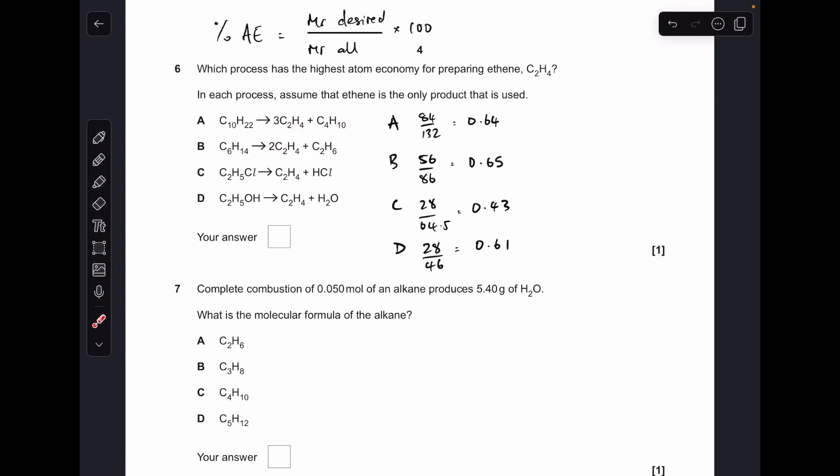Number six. The formula we use to measure percentage atom economy. MR of desired product over the MR of all. I haven't said products there because you can either use products or reactants for that. And then you multiply that by 100 to get it into a percentage. So the desired product in all of these reactions is ethene. Just remember to factor in the balancing numbers. And then when you do those calculations for A through to D, I haven't bothered putting the 100 in. You can see that B was the answer. It's got the highest percentage.